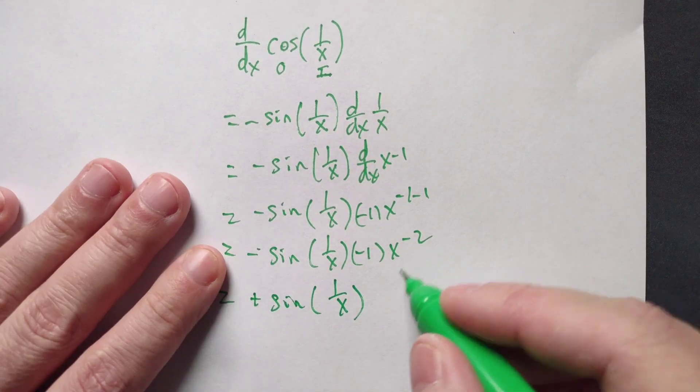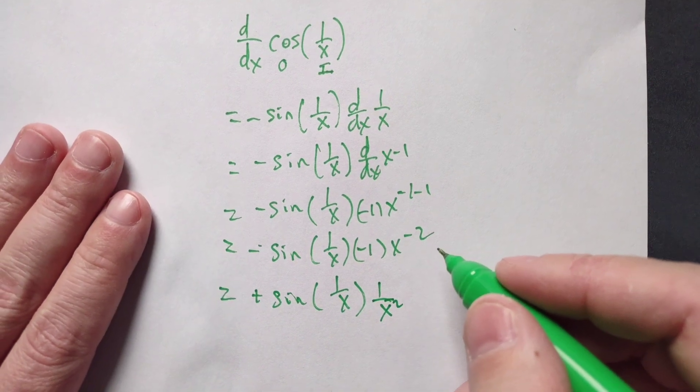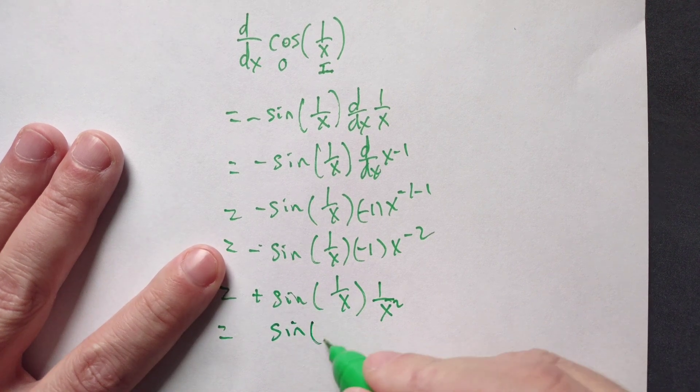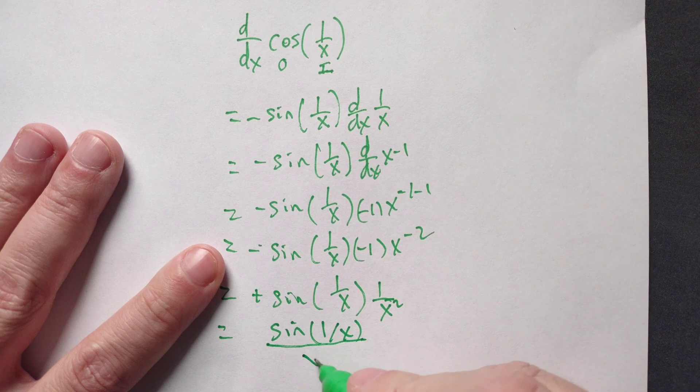And then at the end, you have 1 over x squared. That's the equivalent form of x to the negative second. And conventionally, we just write this all as sine of 1 over x divided by x squared.